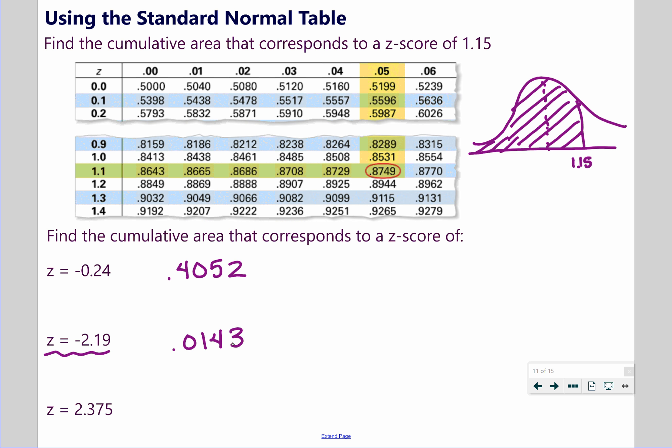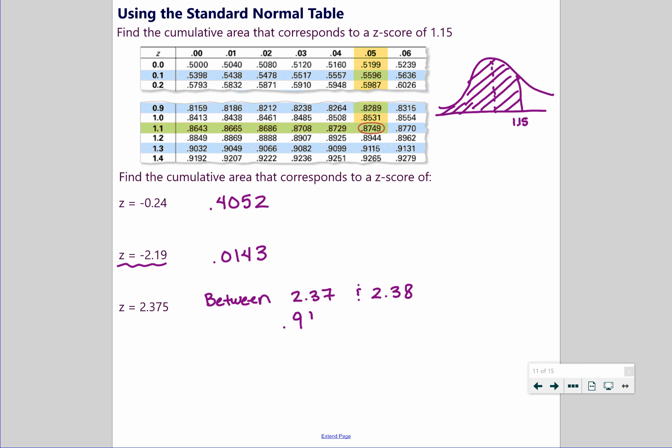And then the last one is 2.375. Now this one has an extra digit on it. You're going to look between 2.37 and 2.38. So we're going to find the area for both of those, and then the value between them is like a midpoint. It's essentially the average of those two numbers. So if you find 2.37, positive 2.37, that gives me 0.9911. And 2.38 is 0.9913. And then you can average them, find the midpoint, basically the same thing, add them up, divide by two, right in the middle, 0.9912 would be the cumulative area up to that point.